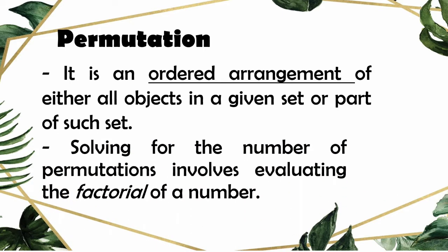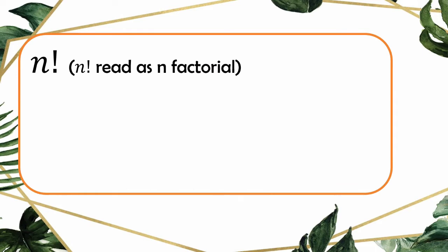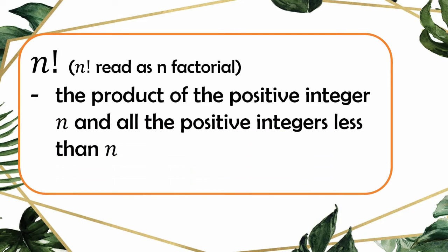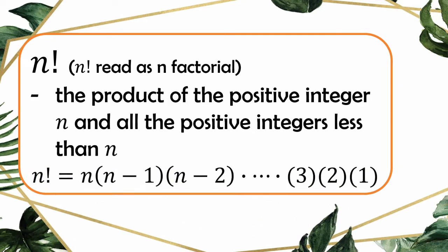We solve the number of permutations by evaluating the factorial of a number. You may ask: what is a factorial? How do we write a factorial of a number? How do we evaluate it? So the factorial of a number is a product of the positive integer n and all the positive integers less than n. The representation is: n factorial equals n times (n minus 1) times (n minus 2), and so on, times 3 times 2 times 1.